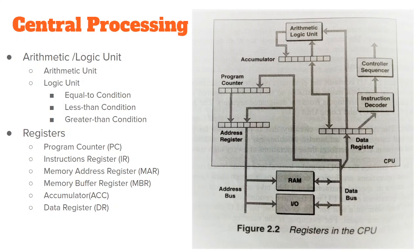The memory buffer register stores data either coming to the CPU or being transmitted by the CPU — similar to how video buffering temporarily stores data from the network so you can watch it. The accumulator is a general-purpose register used to store temporary results produced by the ALU. The data register stores operands — operators like plus, minus, multiplication, and division symbols — as well as the data itself.